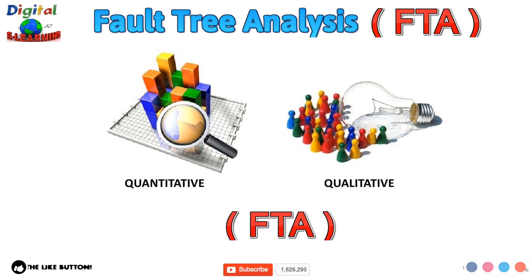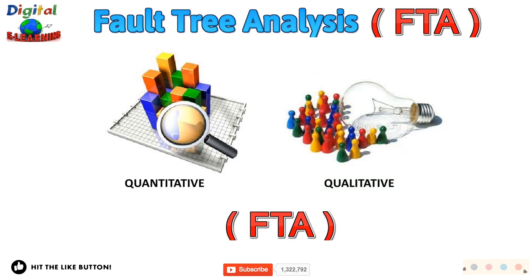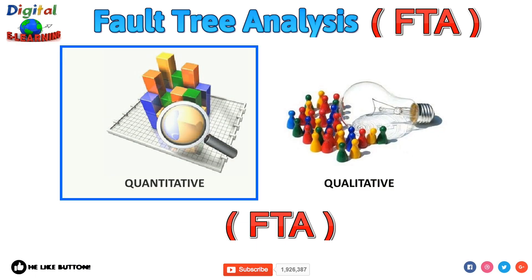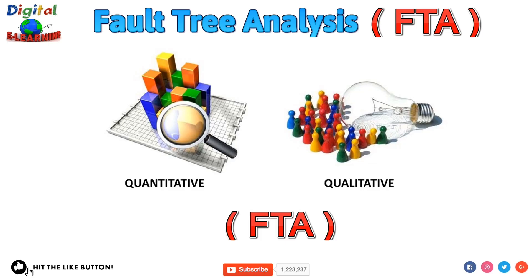FTA can yield both qualitative and quantitative information about the study. Qualitative information may include failure paths, root causes, and weak areas of a system or project. Quantitative FTA gives us the probability estimation of a top event. If quantitative information is needed, calculate the probability of the top event and determine whether corrective actions are required. If necessary, develop measures to eradicate the fault path or minimize the probability of fault occurrence.